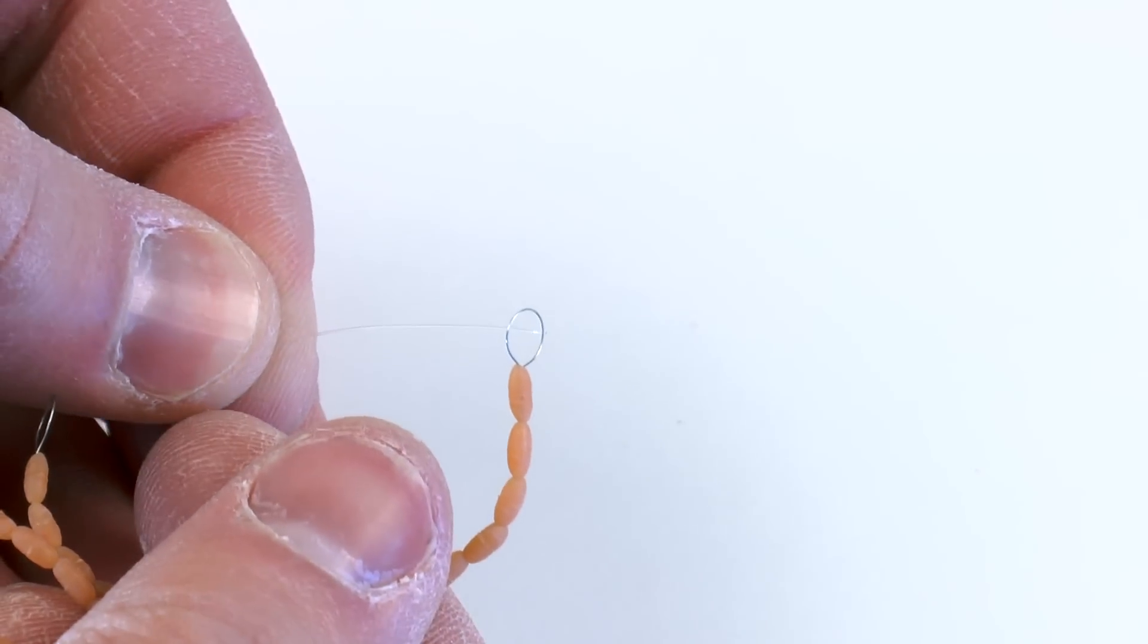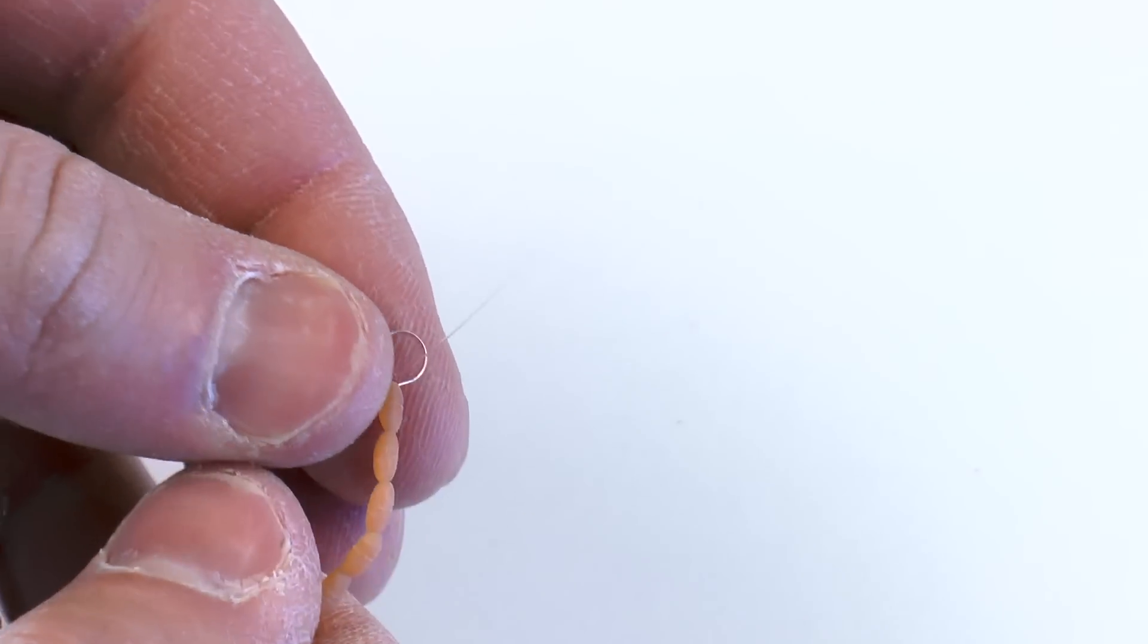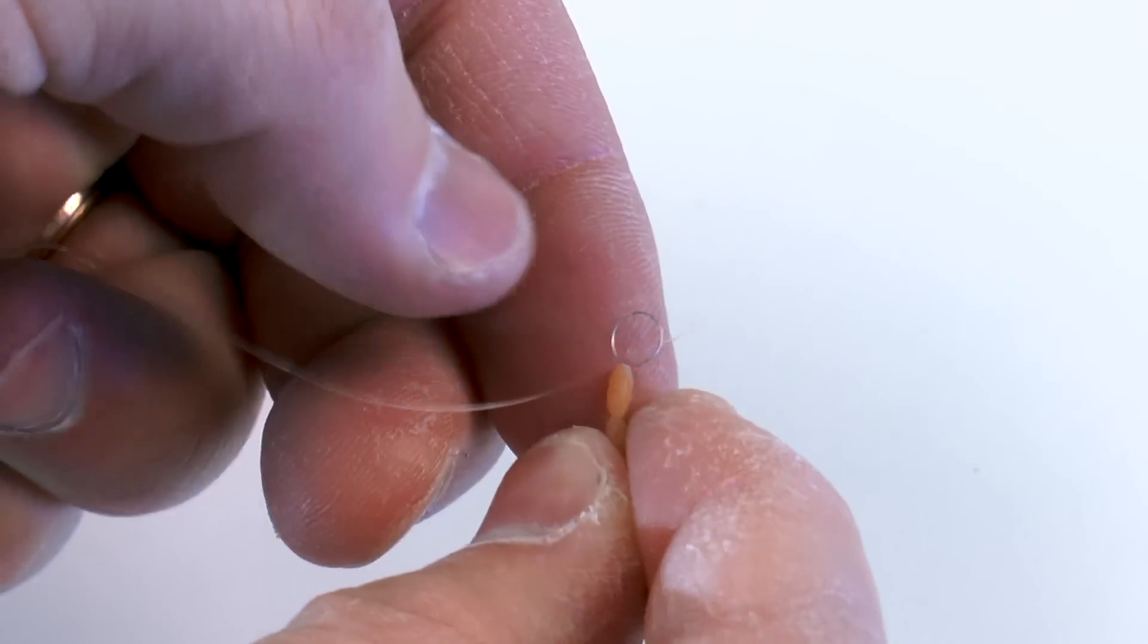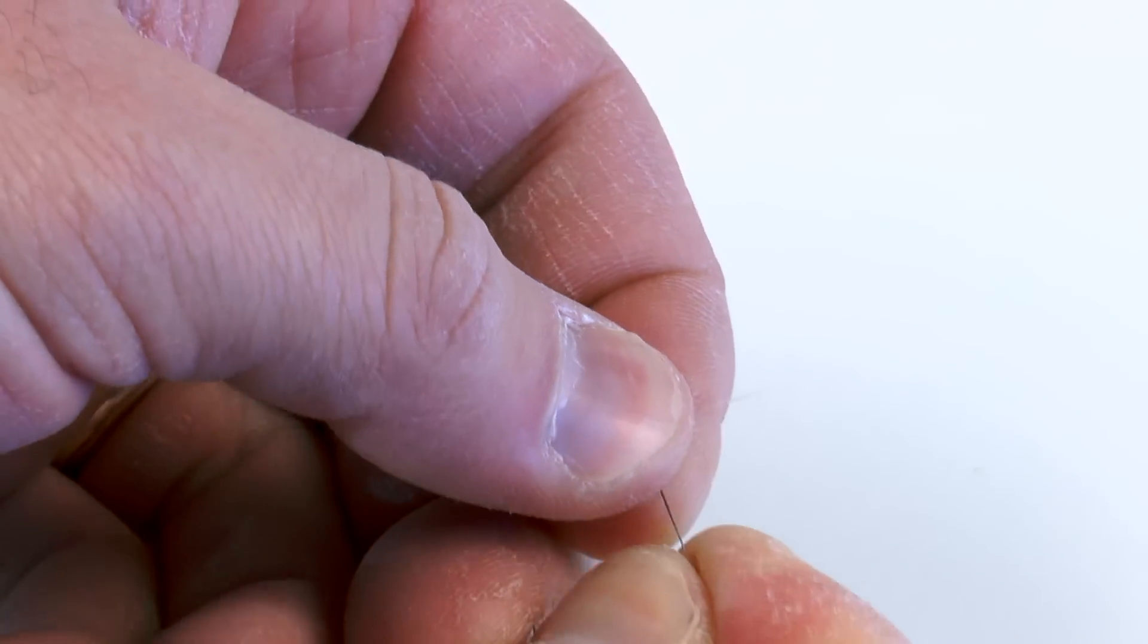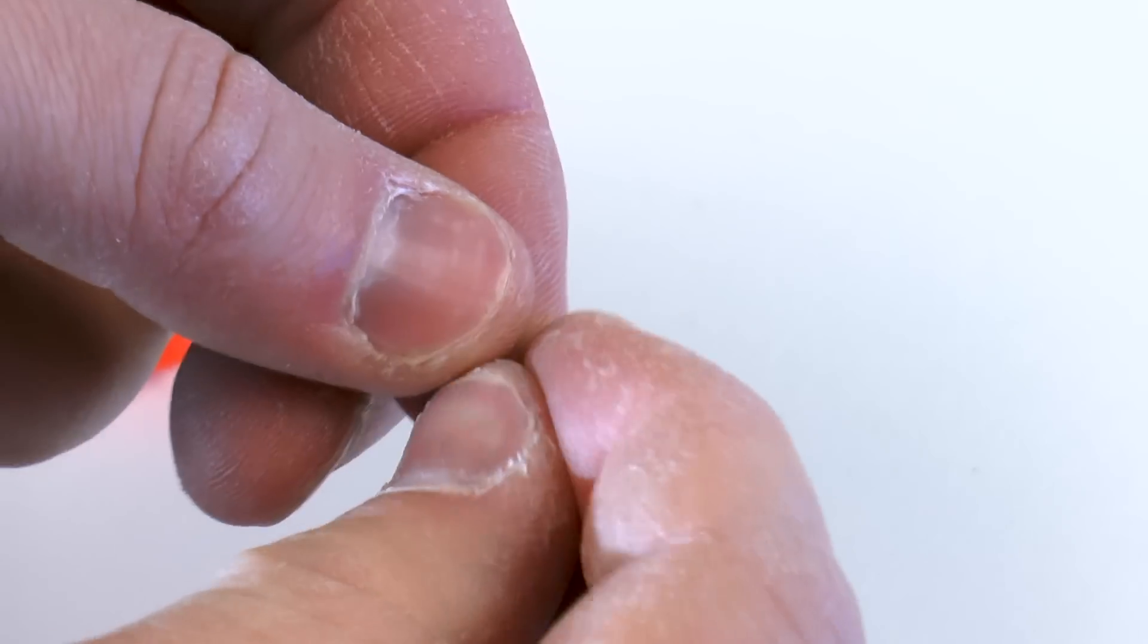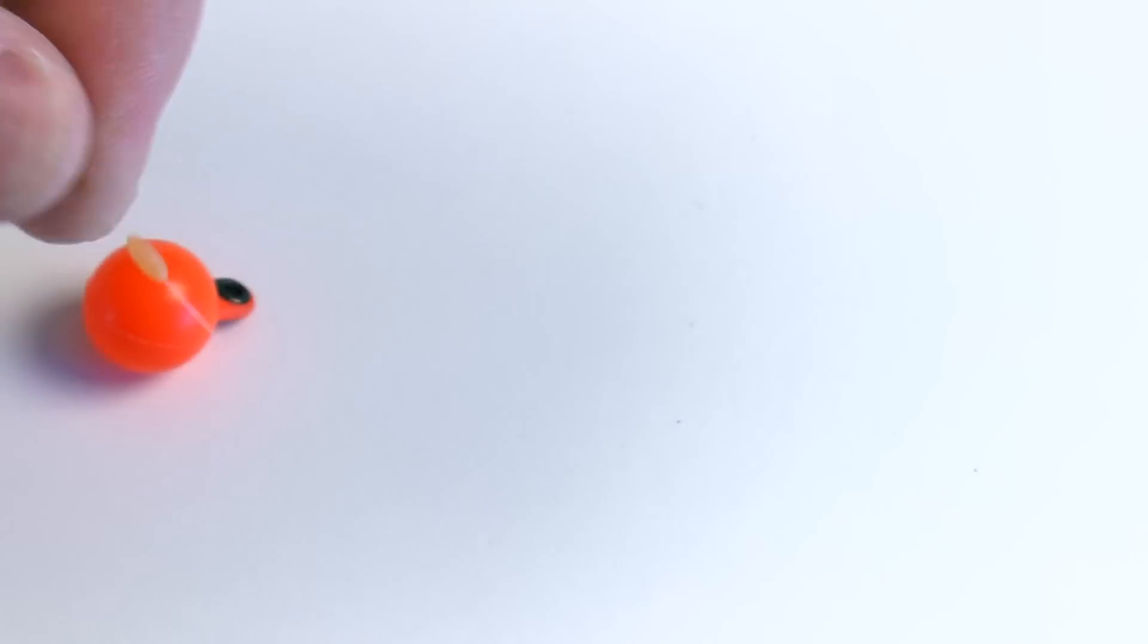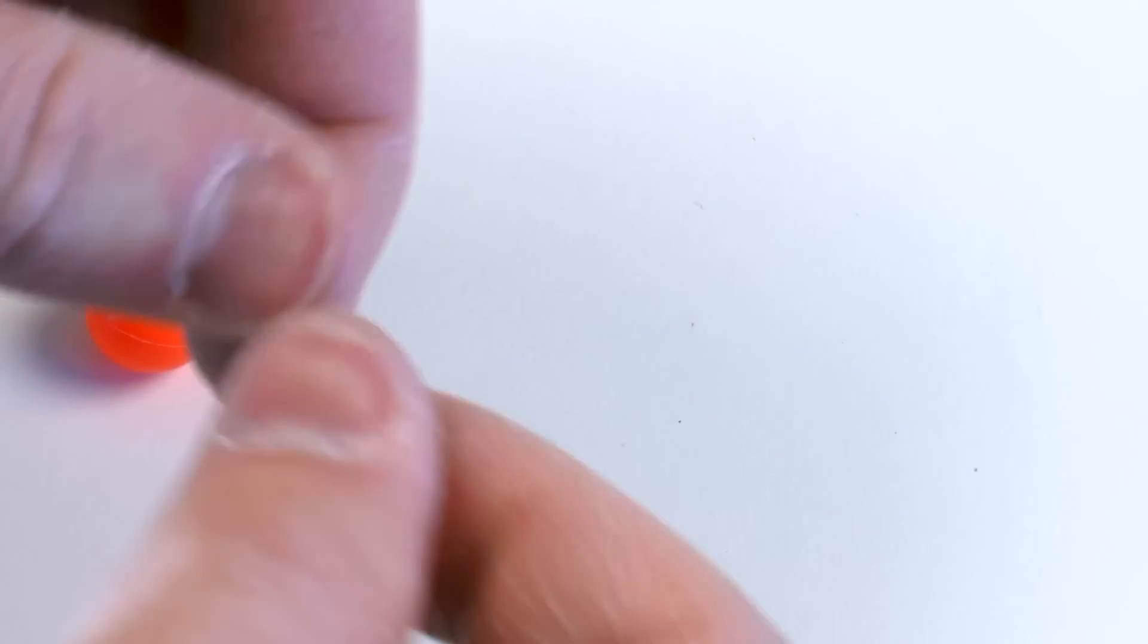And we just simply take our tippet and we're just going to slide it through the wire portion of our threader. Then we're just going to simply take the frog hair retainer and slide it onto our line. Basically thread it onto our line. There we go. We have one on our line. So I just kind of pull it into place.